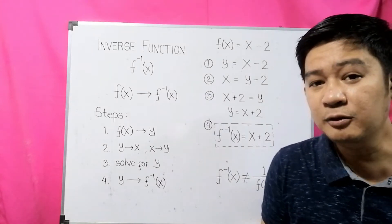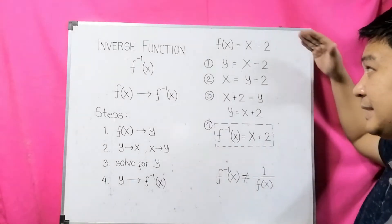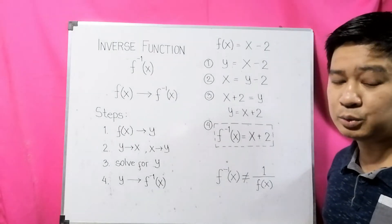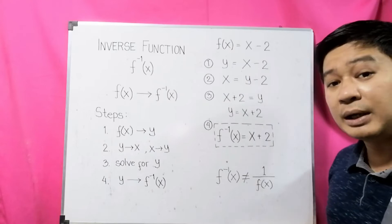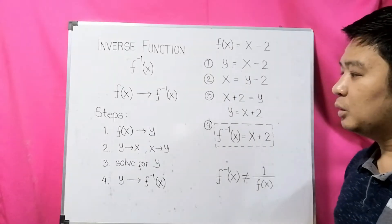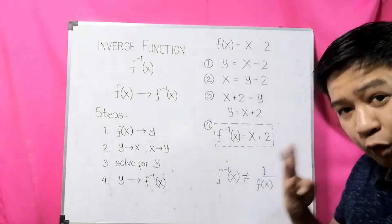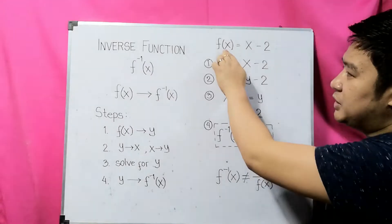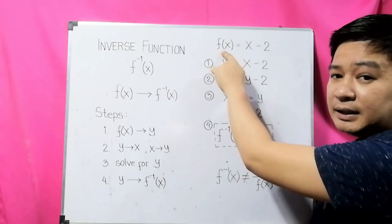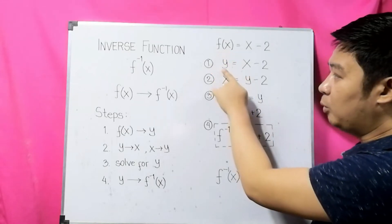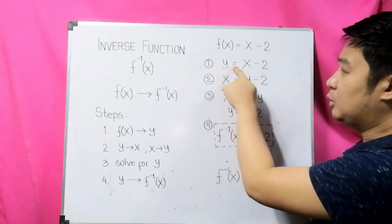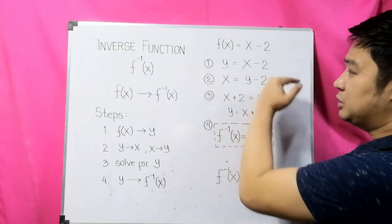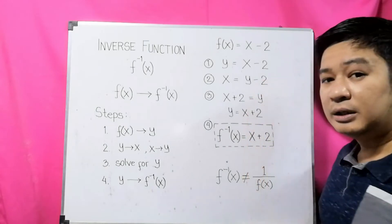Let us now get the inverse function of this example. We have the function f of x equals x minus 2, which is an example of a linear function. We simply follow the 4 steps mentioned earlier. For Step 1, we change f of x into y, so we now have y equals x minus 2. Our expression is now a linear equation.